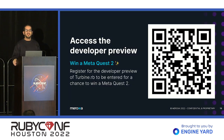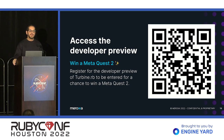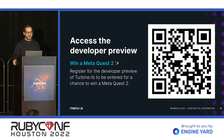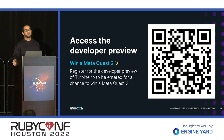If you want to access the developer preview, you can scan the QR code — that'll take you to a landing page where you show your interest. You can also win a Meta Quest 2 by filling that out. Sign up, let us know what you want to do with it and how you'd like to use it, and we'll try to onboard as many people as quickly as possible.